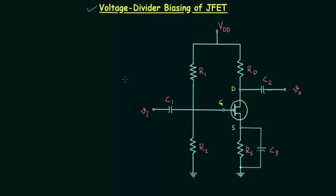The basic construction you can see on your screen. The basic construction of voltage divider bias will remain the same as it was in the case of BJT. If you compare the construction with the BJT, you will find only one difference: in place of a common emitter BJT, we have an N-channel JFET.